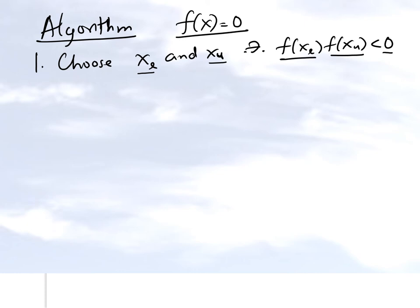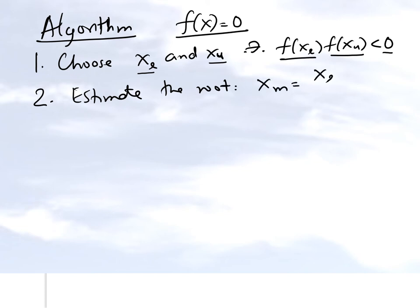The next step is to estimate the root. The estimate of the root is that xm equals xl plus xu divided by 2. That is how you find the midpoint of those two points.